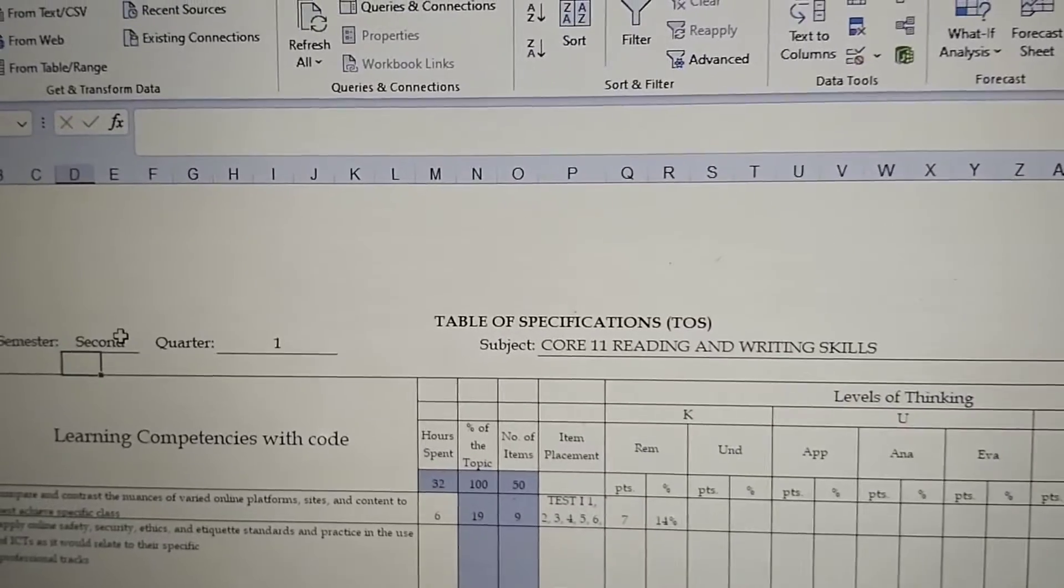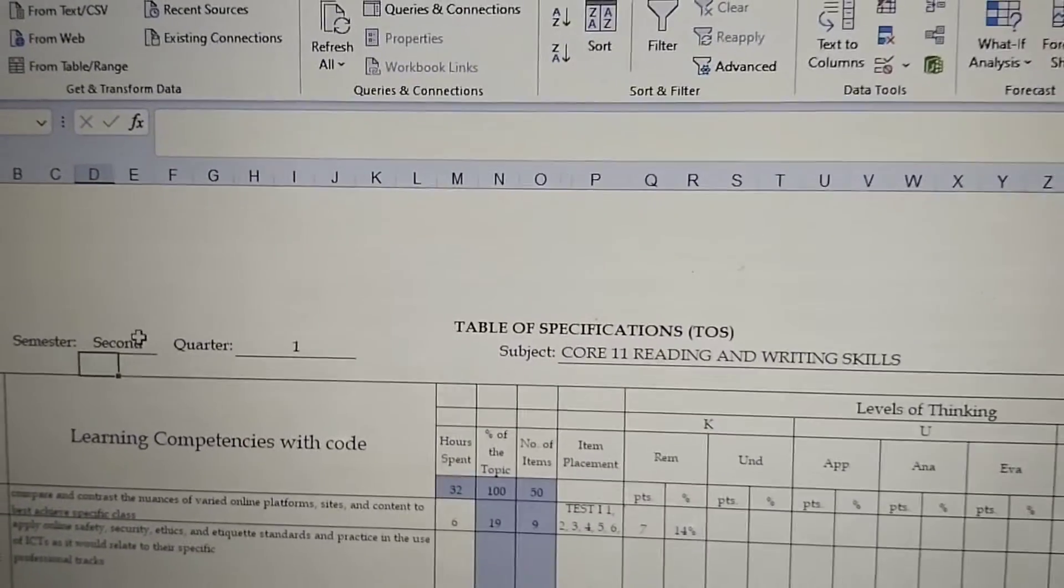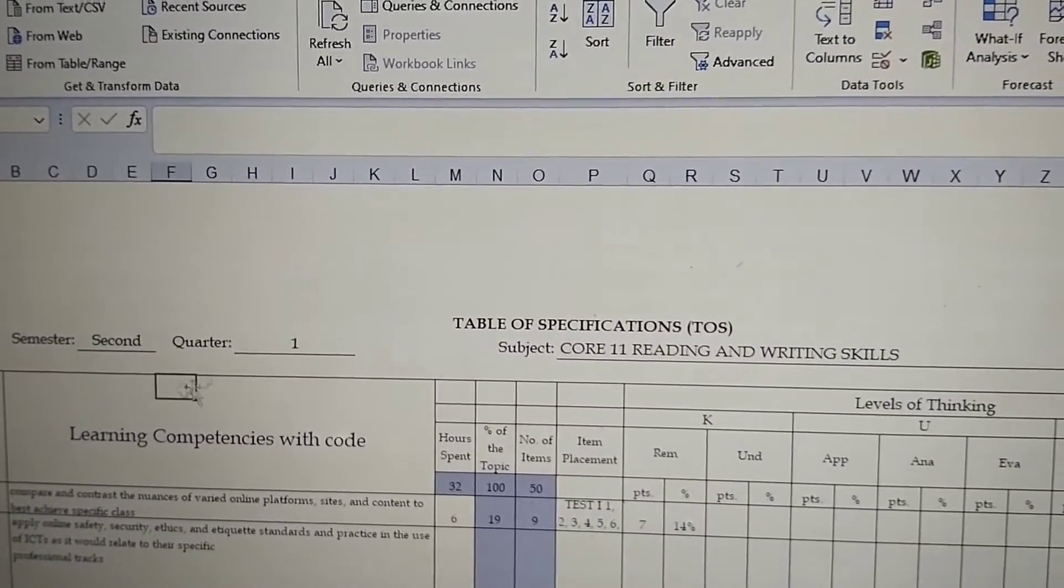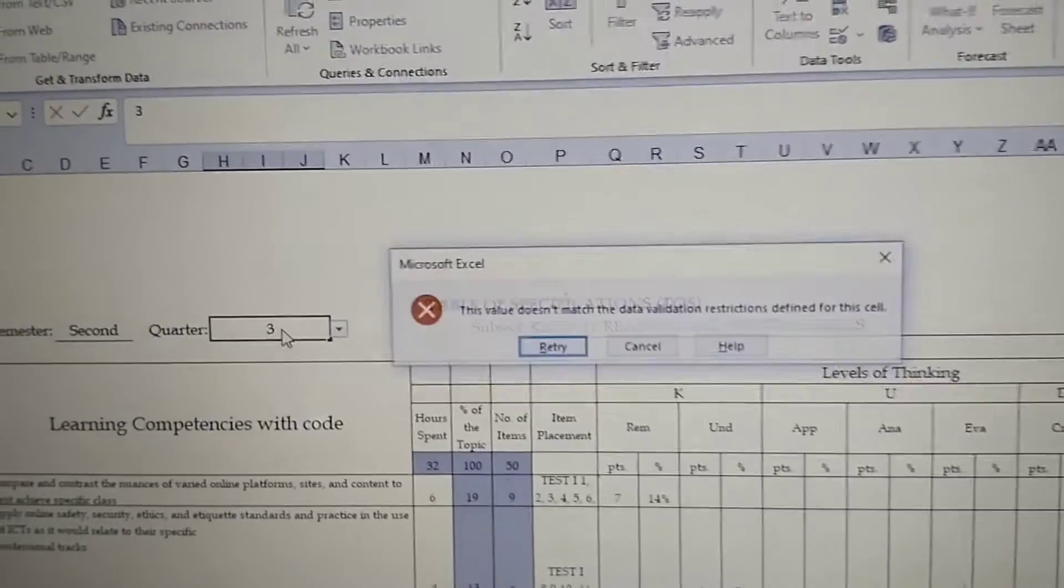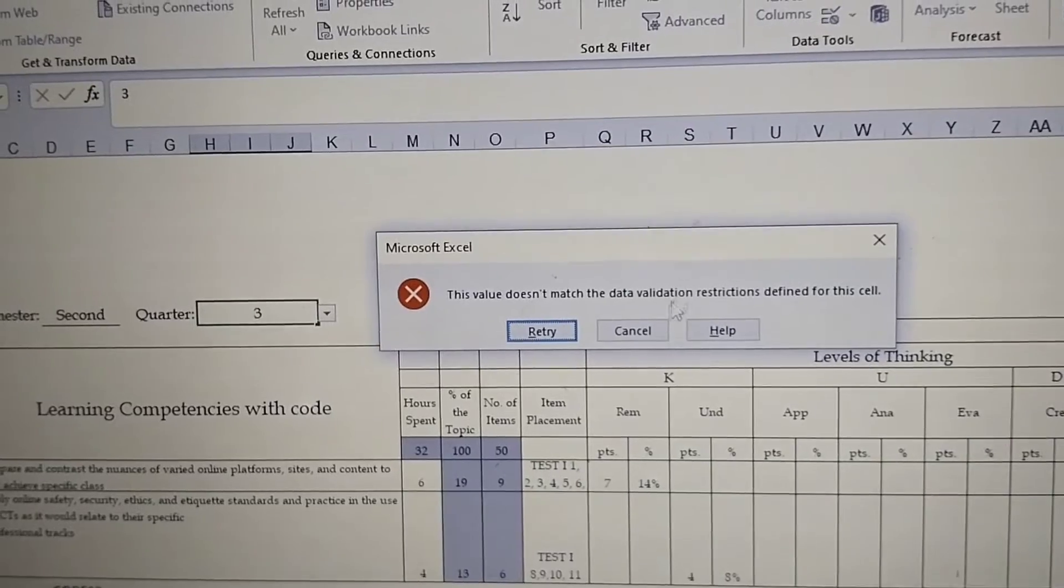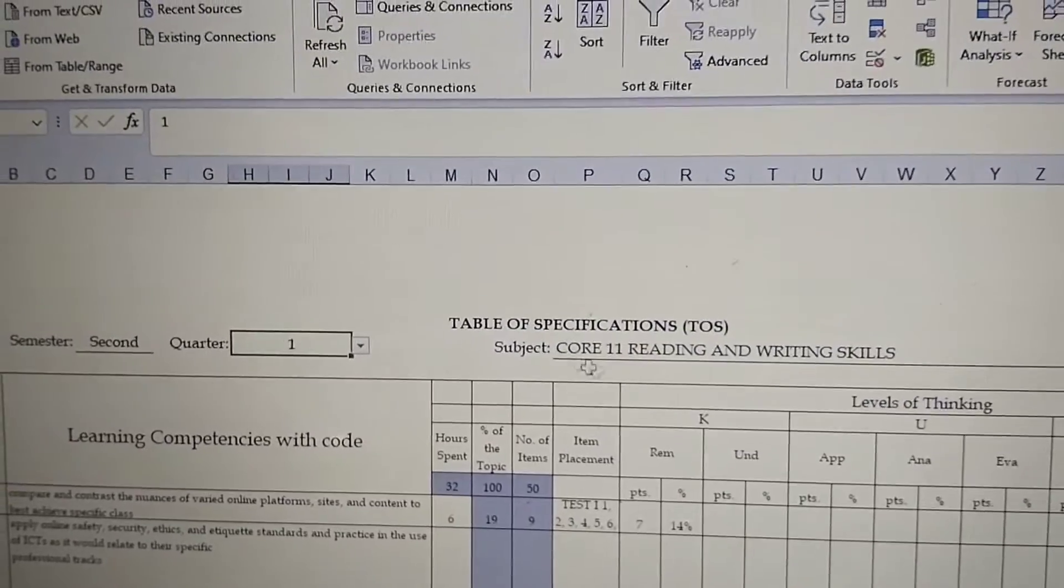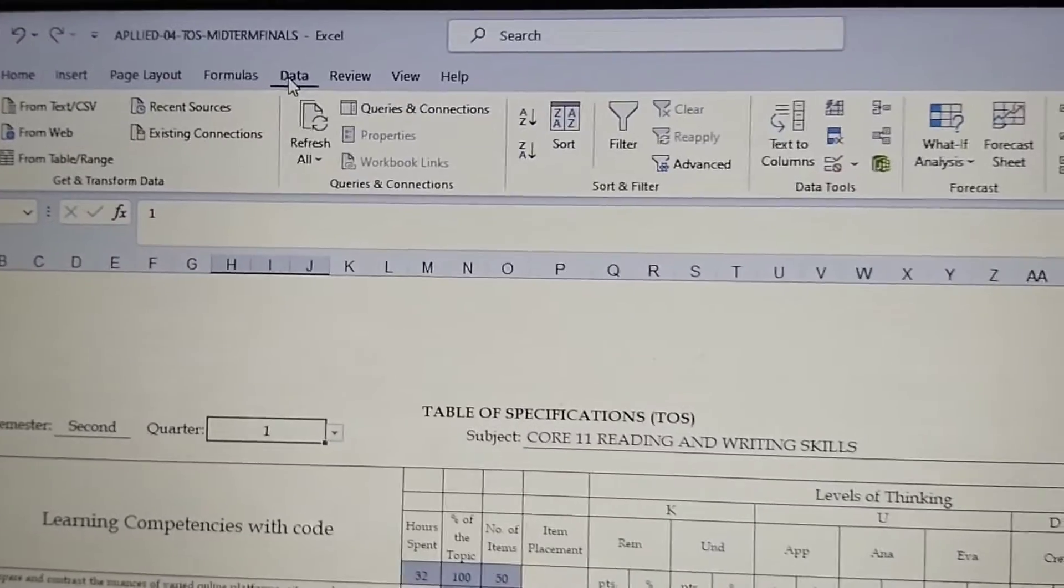OK, let's see. OK, so it's working. Let's try some other cells here. Let's try this one. OK, so it says again value doesn't match. Let's click on Cancel.